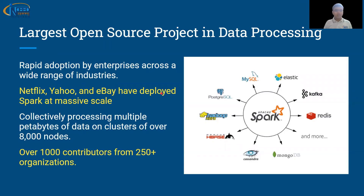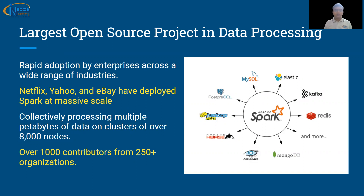As soon as it came, it was adopted by a lot of companies from different domains and industries. Companies like Netflix, Yahoo, and eBay deployed Spark at massive scale — there were clusters of 8,000 plus nodes where petabytes of data was being processed. Thousands of contributors from 250 plus organizations are contributing to Spark, making it the largest open source project in the data processing segment.